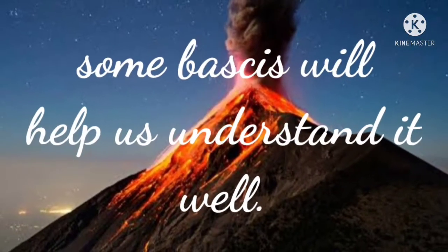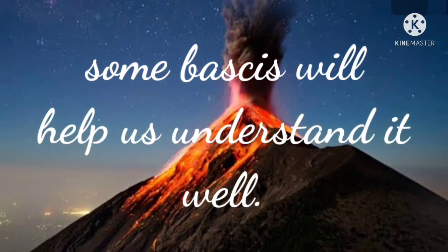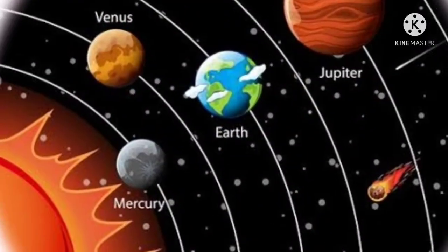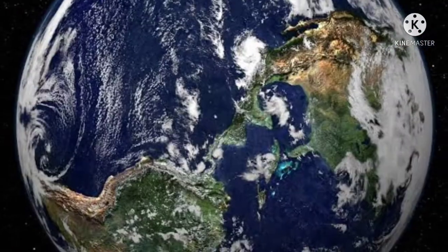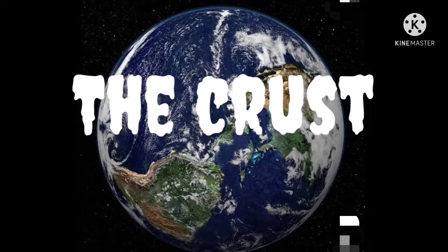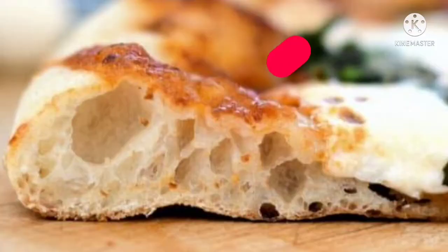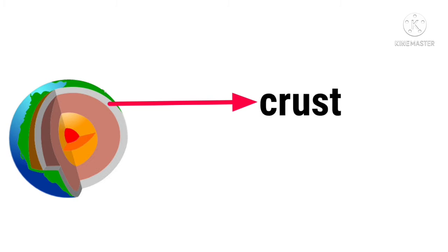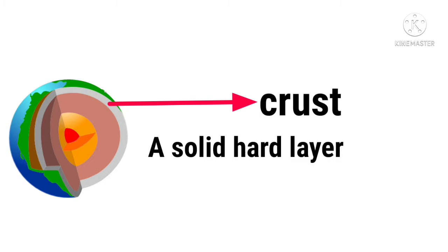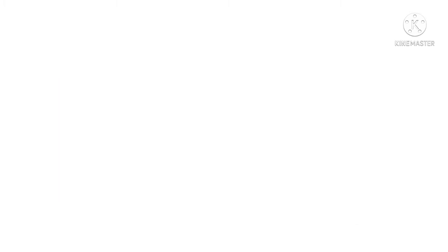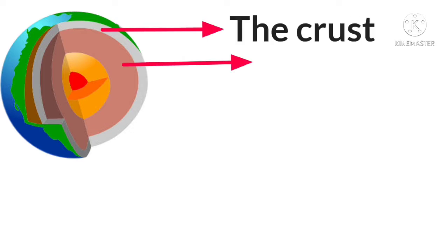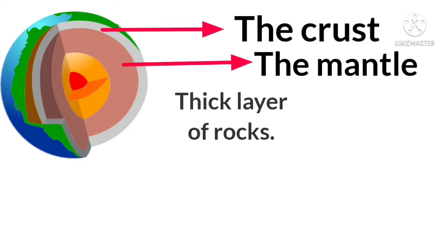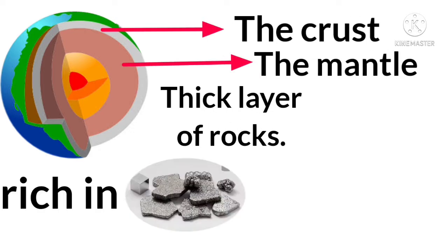Let us start with some basics that will help us understand volcanoes well. First, we will know about the different layers of the Earth. First is the crust — not the crust of a pizza, but the outermost layer of the Earth. The crust is a solid, hard layer made up of rocks. Second is the mantle. Under the crust is the mantle, a thick layer of rocks rich in iron and magnesium.